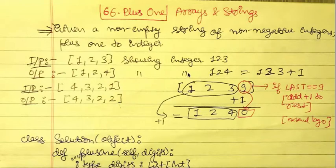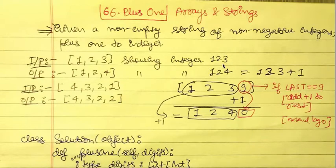When the rightmost digit is nine and we add one to it, it becomes zero and the carry is forwarded to the next digit on the left. When the rightmost digit is not nine, we simply add one to the last digit, replicate the rest of the list, and we are done.